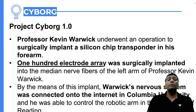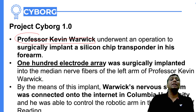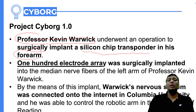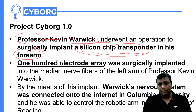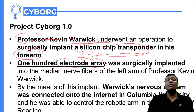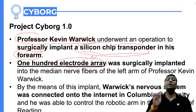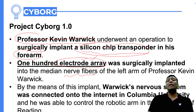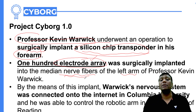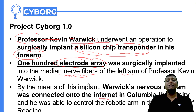For Project Cyborg 1.0, Professor Kevin Warwick, through surgery, had a silicon chip transponder implanted in his forearm. In that transponder, an array of around 100 electrodes was implanted into the median nerve fibers of his left arm. Through the help of these electrodes, Warwick's nervous system was connected to the internet. From Columbia University's internet, Warwick was connecting to the robotic arm of the University of Reading.